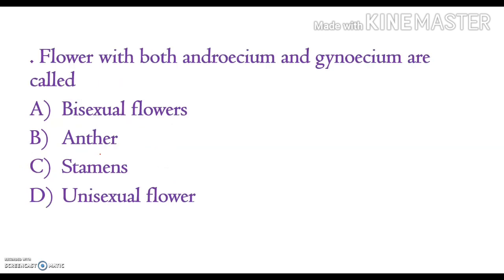A bisexual flower is a flower having both androecium and gynoecium. A flower with only stamens is a unisexual flower. The correct answer is option A — a bisexual flower is one having both androecium and gynoecium.